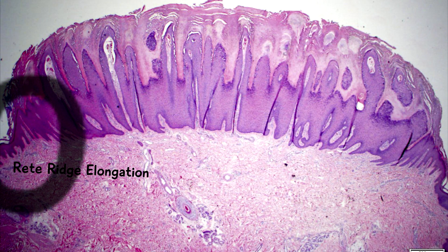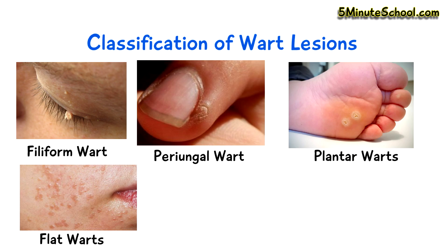There are different types of warts based on appearance and affected site. Filiform warts have long thin projections and are most commonly seen on the face. Periungual warts usually appear around the nails and have a cauliflower shape.